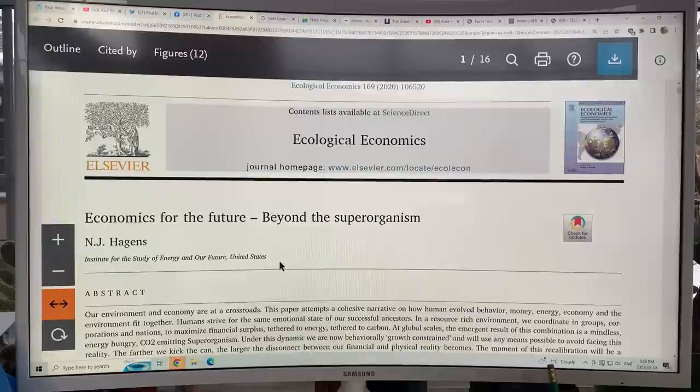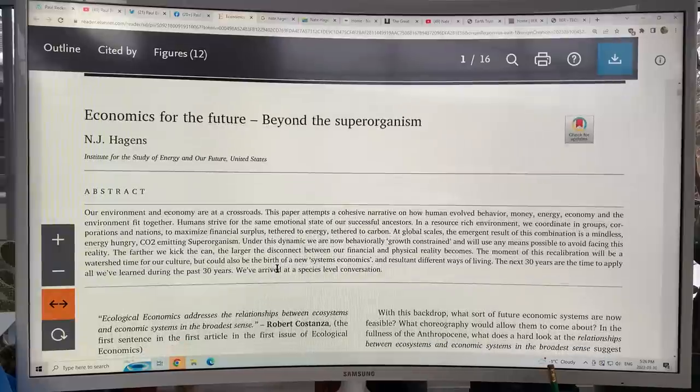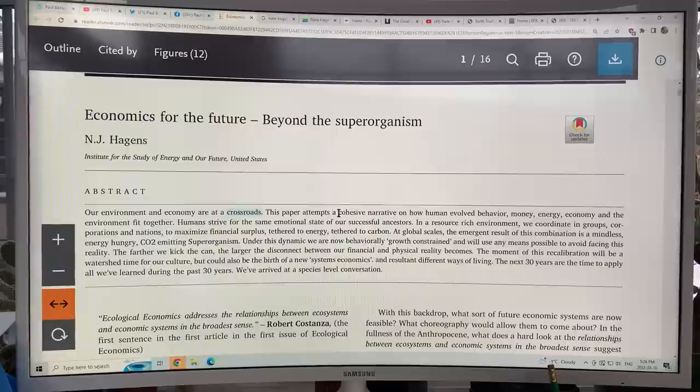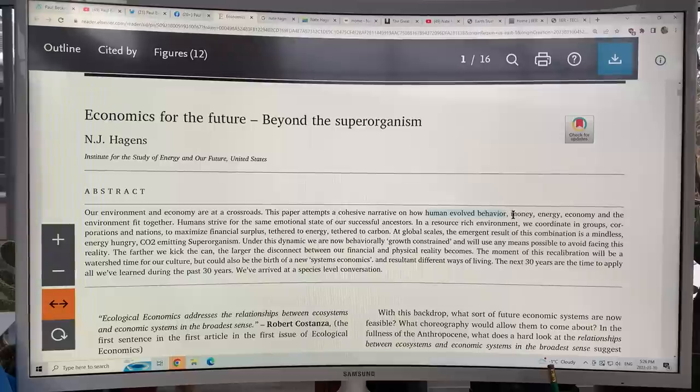I'll talk a bit more about Nate Hagens when I get through this paper. But basically, our environment and economy are at a crossroads. So the paper attempts a cohesive narrative based on how human evolved behavior, money, energy, economy, and the environment all fit together.